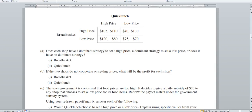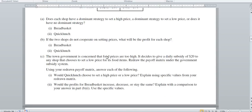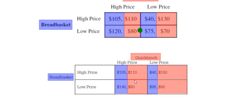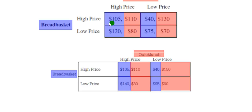Now, what happens if there is a subsidy of twenty dollars to any shop that chooses to set a low price for its food items? What we want to do is add twenty dollars to the low price part of the matrix. The high prices don't change at all, but we're adding twenty to every low-price cell.